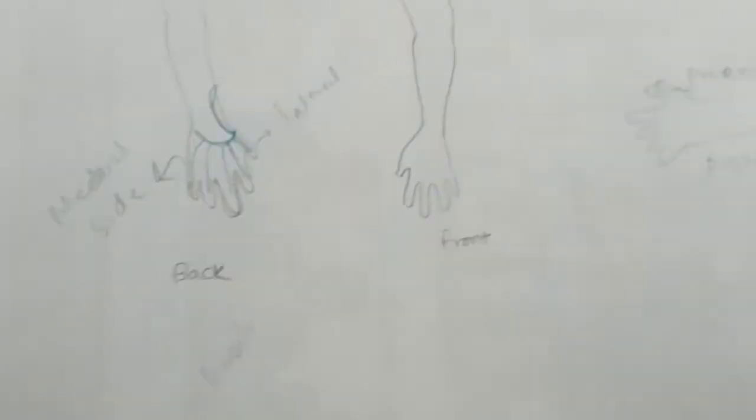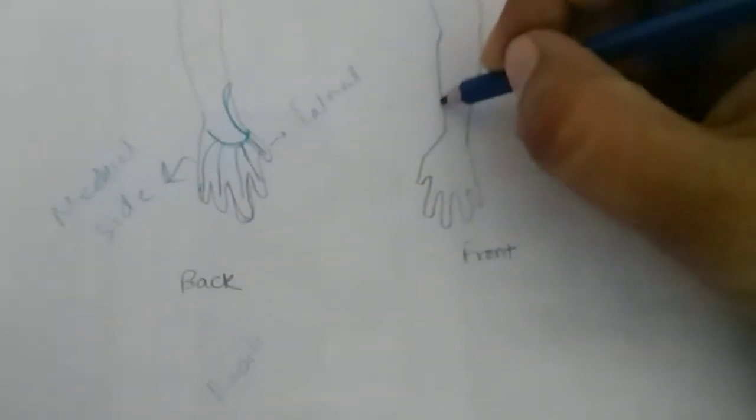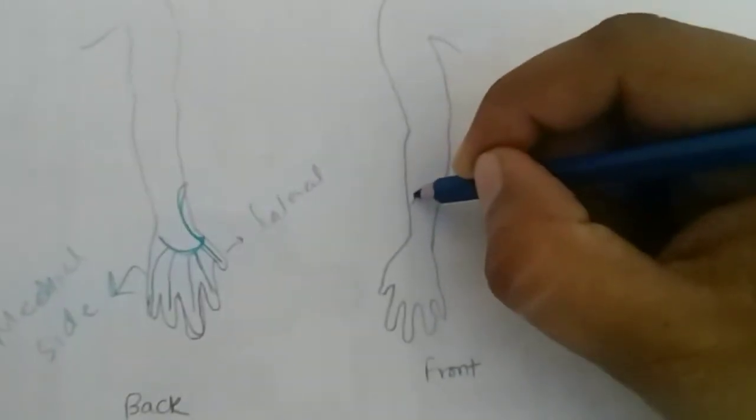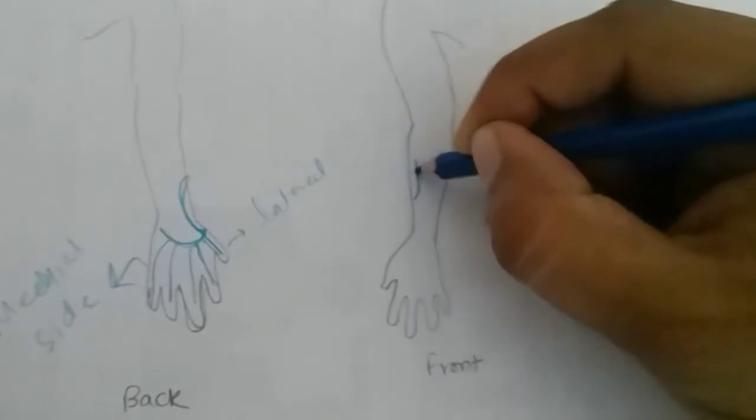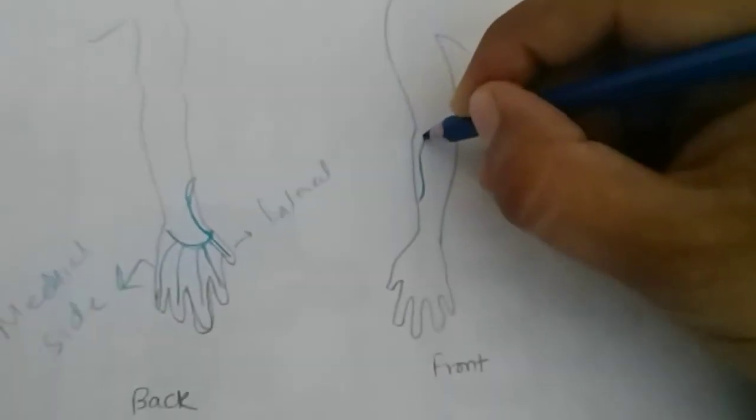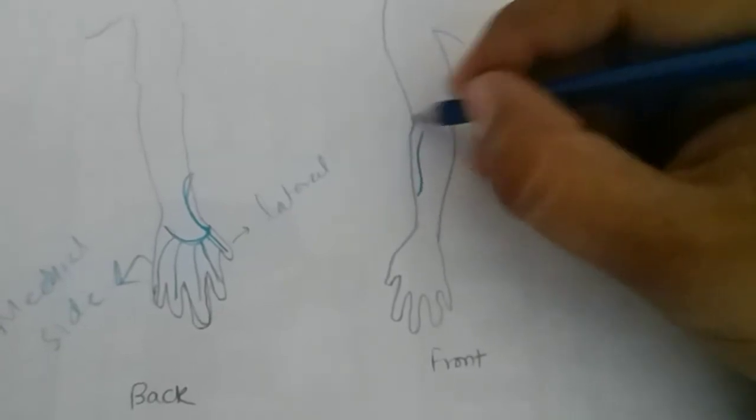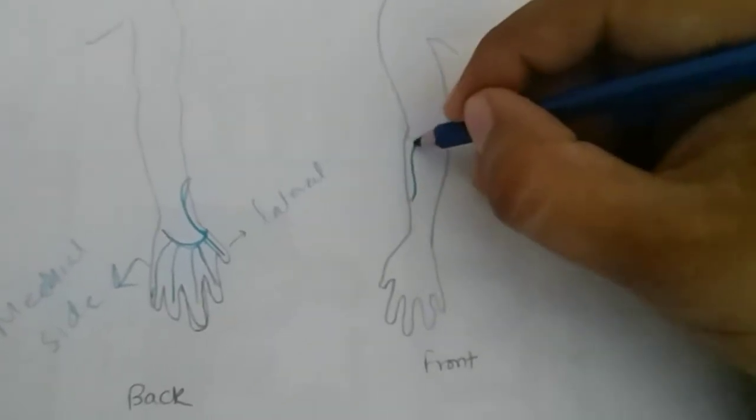From here it will go upward. You can see it here going upward. This is your elbow region and it will continue going upward.